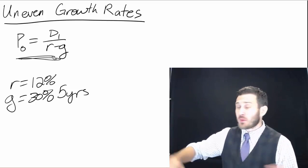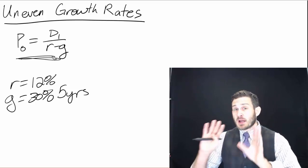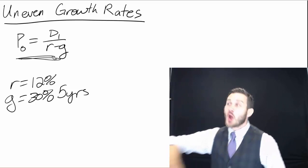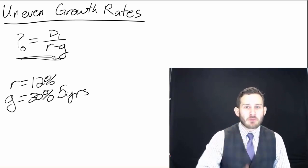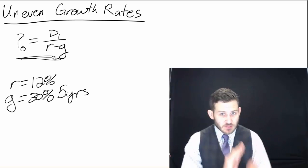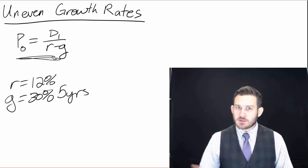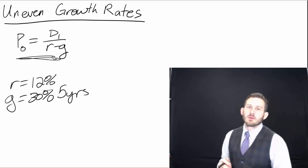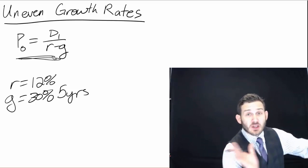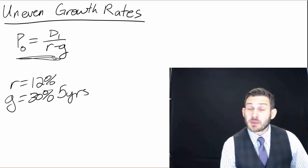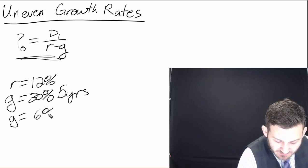It also doesn't make sense because when we put a 30% growth rate into the Gordon growth model, that's our expectation forever into the future. There's no way a company can grow at 30% every year for eternity — that would make it larger than the world's GDP in not too long a time. So what we need to do is break this into a couple pieces: say it's going to grow at 30% for 5 years, and then after that the growth rate is going to fall to say 6%.